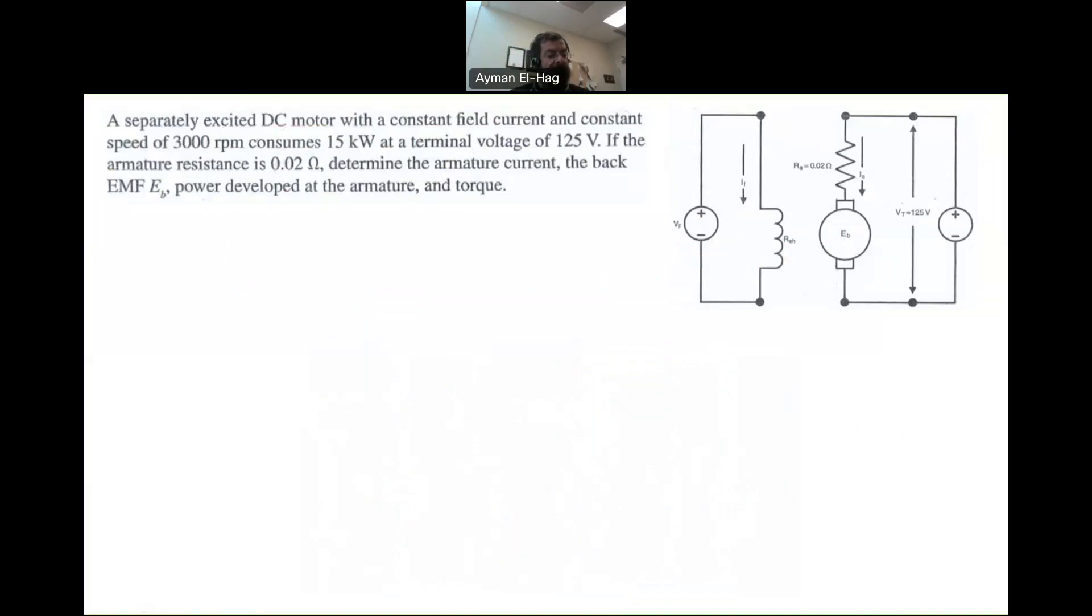Now, here we have a constant field current. So IF is constant. What does this mean? It means that the flux is constant, doesn't change in this question.